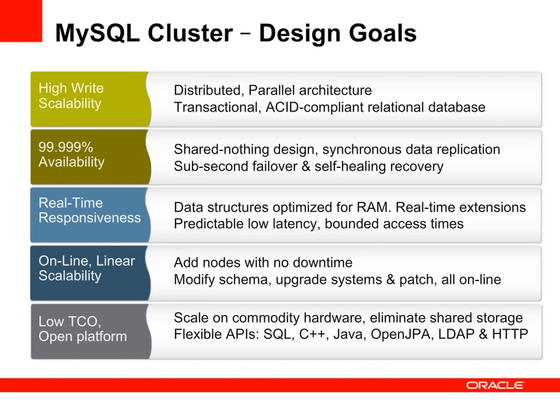Fourth is online linear scalability. As demand on the database grows, either capacity or performance, you can add additional servers and nodes with no loss of service. In addition, you can also make changes to the schema, upgrade the software, the hardware, apply patches, all without having any kind of loss of service to the application.